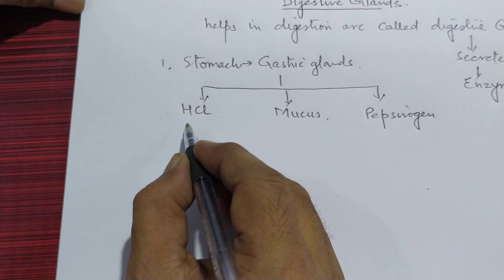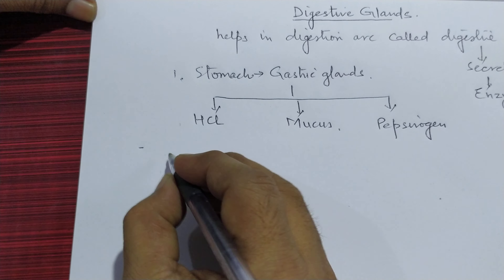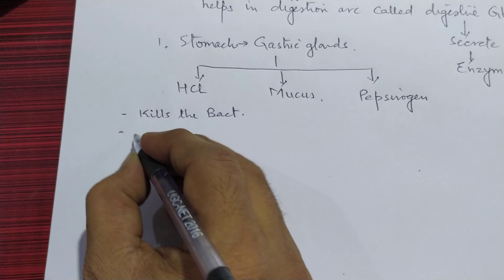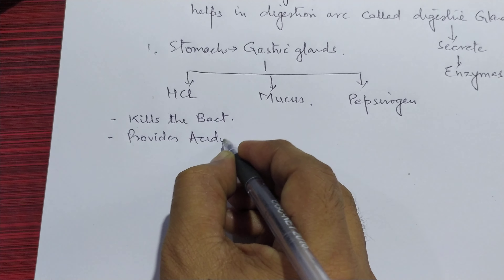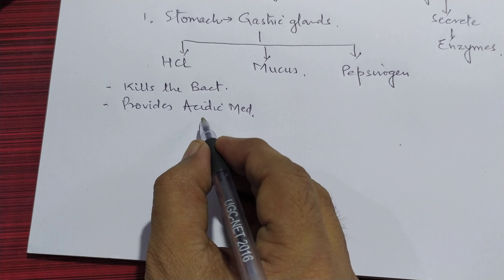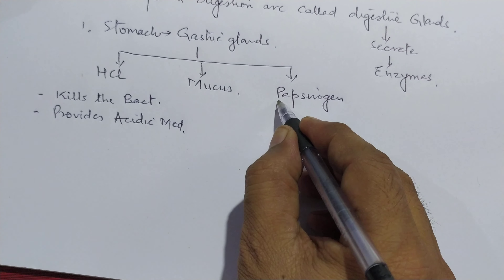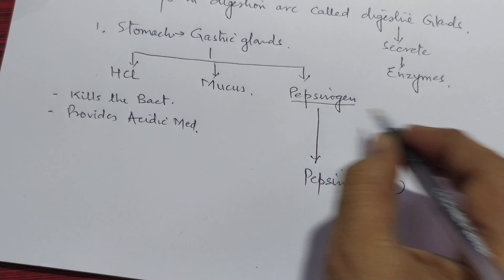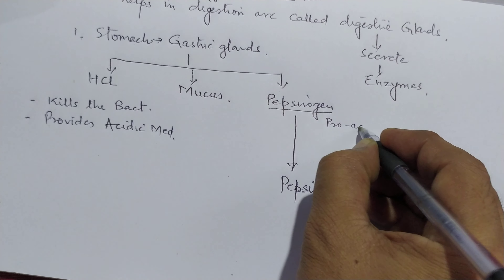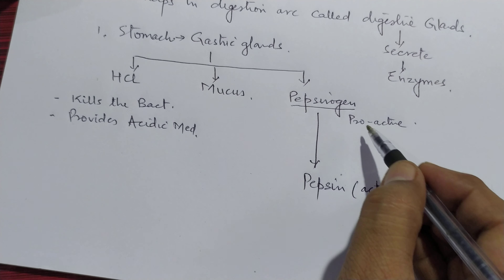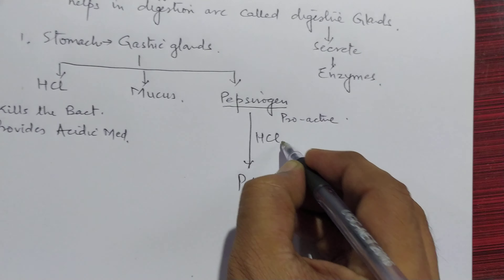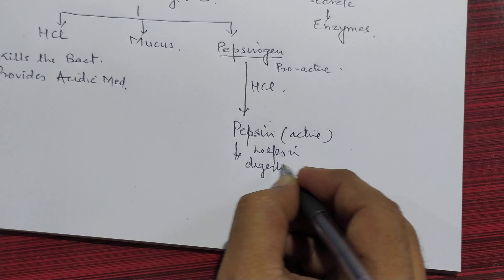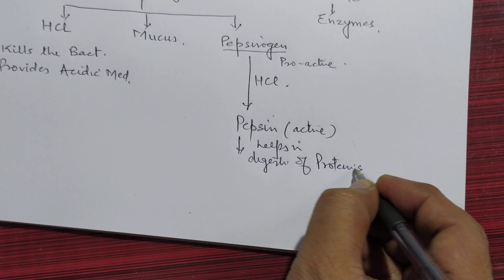What is the function of HCL? It kills the bacteria present in the food. It provides an acidic medium, and this acidic medium is very important for the conversion of pepsinogen into pepsin. Pepsin is the active enzyme. Pepsinogen is the pro-active form, which is converted into the active form with the help of HCL. This pepsin enzyme helps in the digestion of protein present in your food.